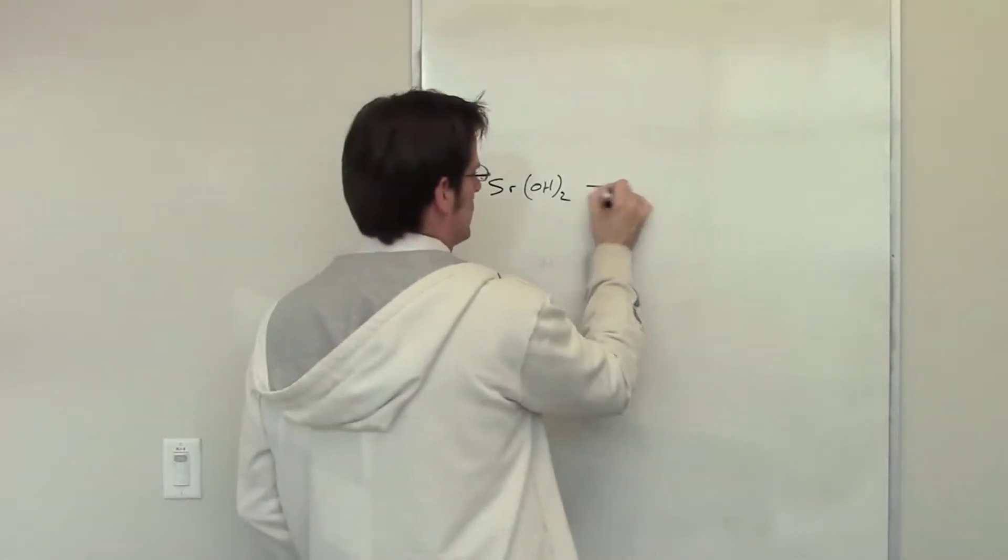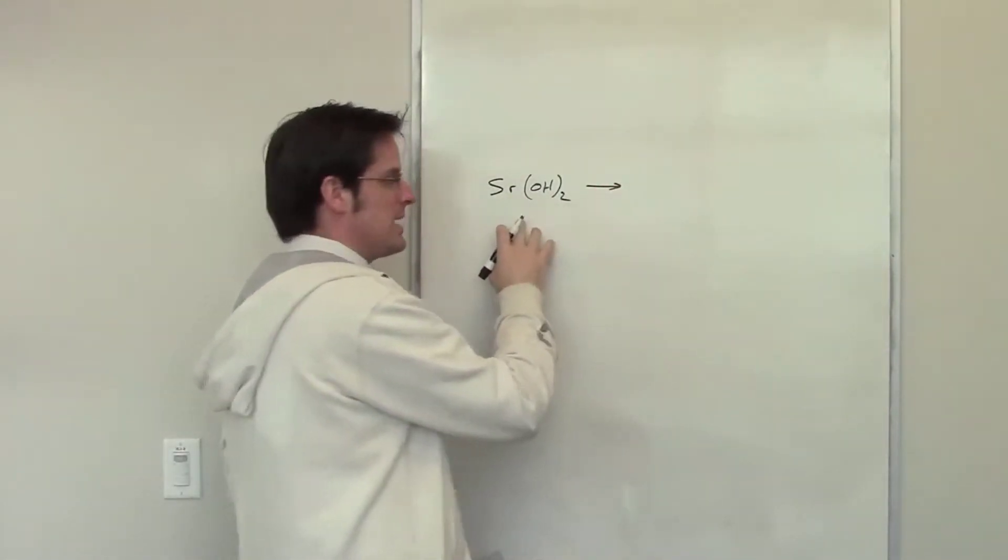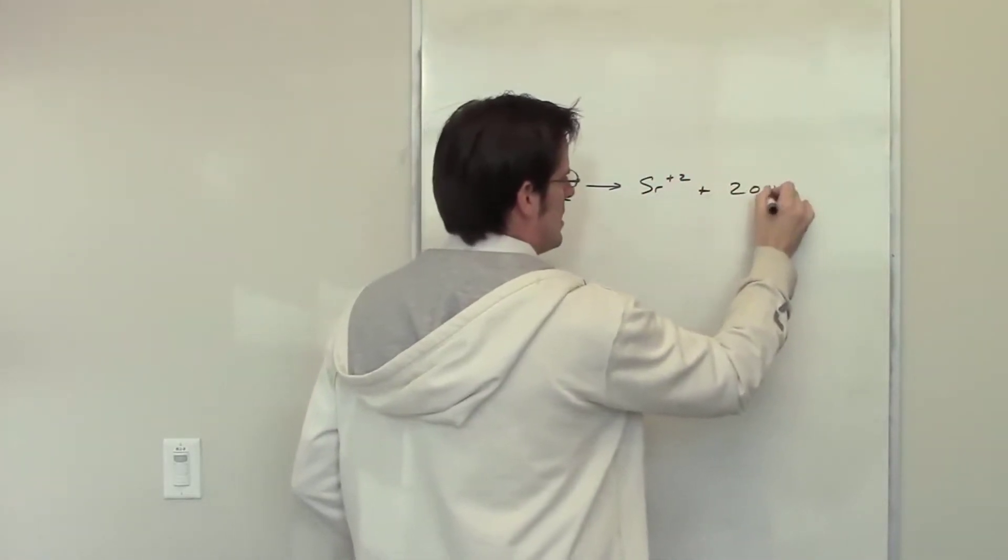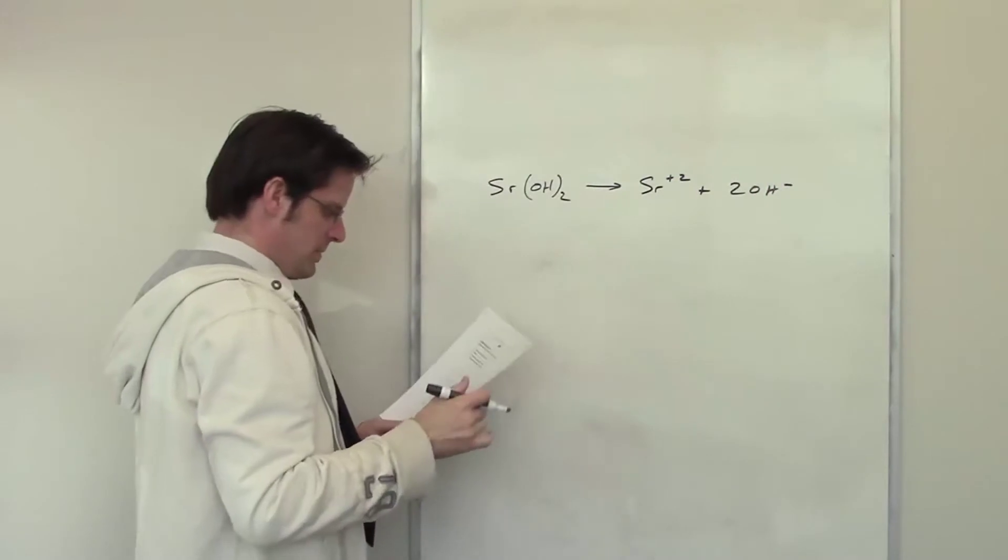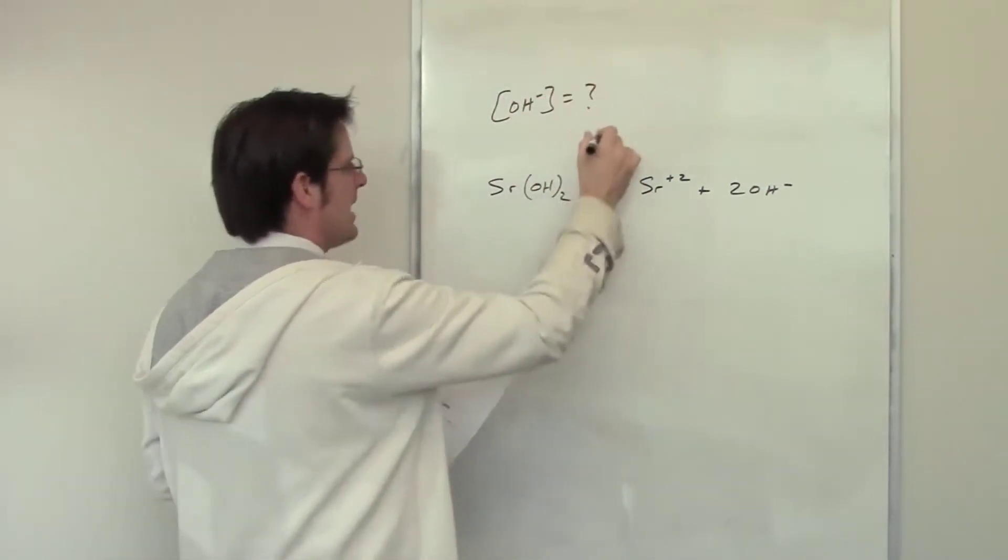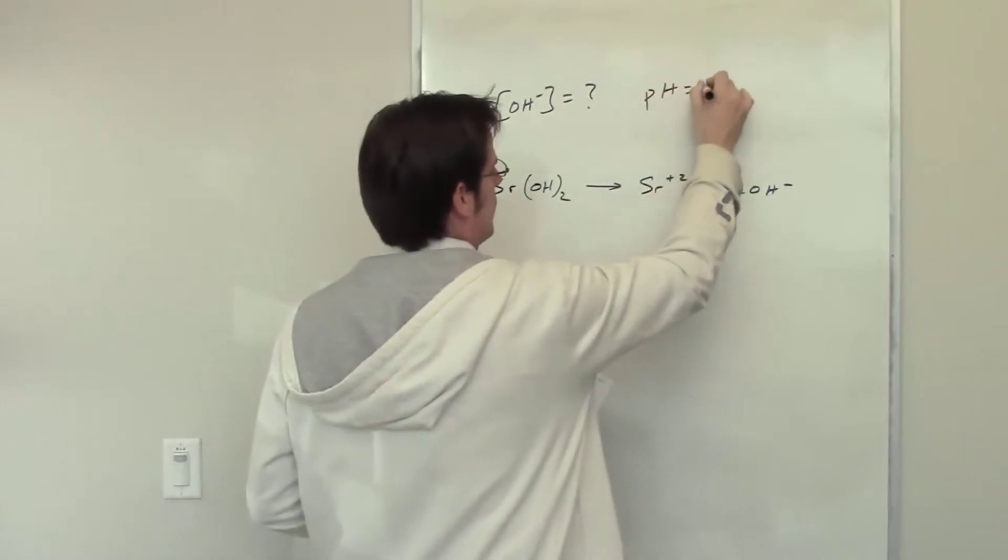Let's start an aqueous solution. Because it's a strong base, it will dissociate virtually 100% to give me these products. It wants me now to calculate the hydroxide ion concentration and the pH for this system.